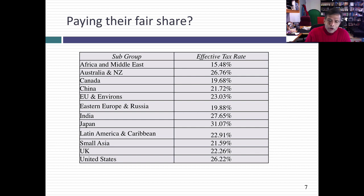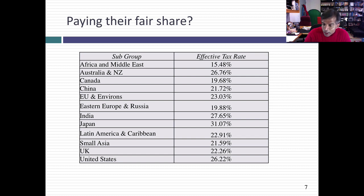So U.S. companies are paying their fair share in taxes if you define fair share as what companies around the rest of the world pay. If, however, your definition of fair is paying 40%, then yes, U.S. companies could pay more and they're not. That debate is playing out in politics and economics, and it's going to be a factor in how the tax code gets rewritten.